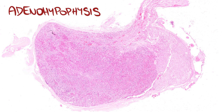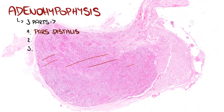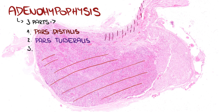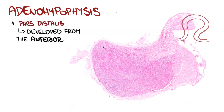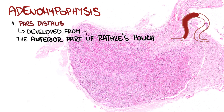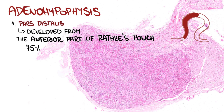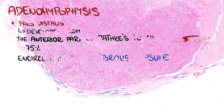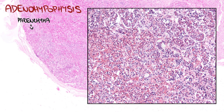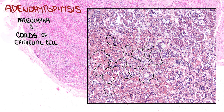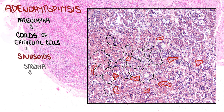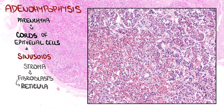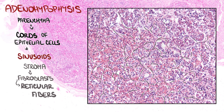Adenohypophysis comprises three parts: pars distalis, pars tuberalis, and pars intermedia. Pars distalis developed from the interior part of Rathke's pouch. It accounts for 75% of the adenohypophysis and is encircled by a thin fibrous capsule. Parenchyma is made up of cords of epithelial hormone-secreting cells interspersed with sinusoids. Stroma is composed of scarce fibroblasts which produce reticular fibers supporting the cords of epithelial cells.